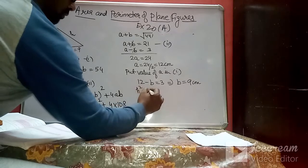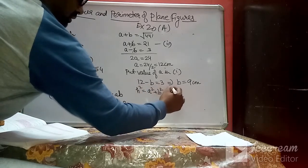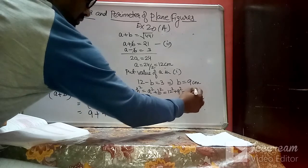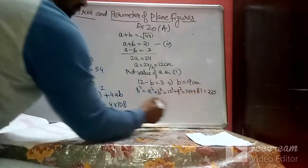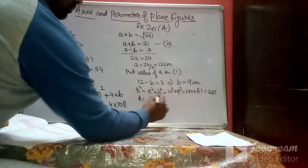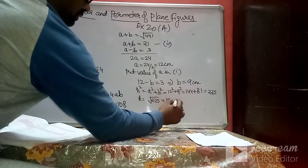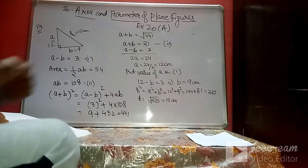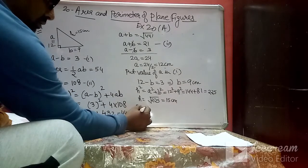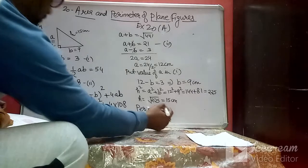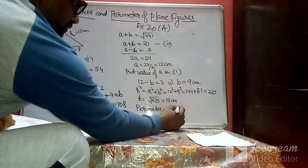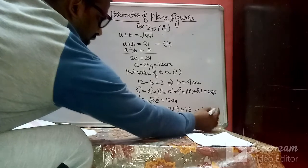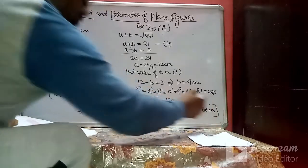Using Pythagoras theorem, hypotenuse h² = a² + b² = 12² + 9² = 144 + 81 = 225, so h = 15 cm. The perimeter is 12 + 9 + 15 = 36 centimeters.